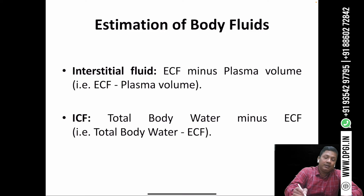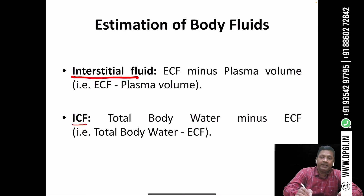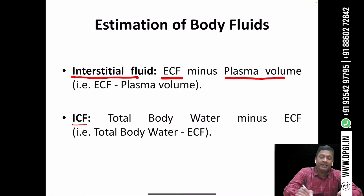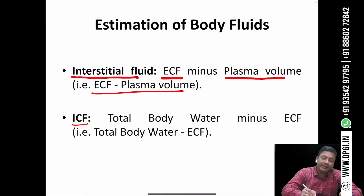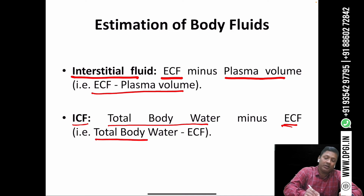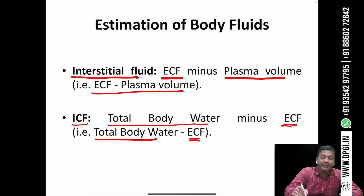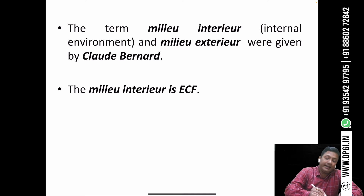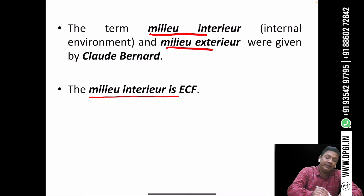The interstitial fluid volume and intracellular fluid volume cannot be measured directly — they are measured indirectly. Interstitial fluid volume is estimated by subtracting plasma volume from ECF volume (ECF minus plasma). Intracellular fluid volume is estimated by subtracting ECF from total body water (TBW minus ECF). The ECF is also called the milieu intérieur, a term given by the scientist Claude Bernard.